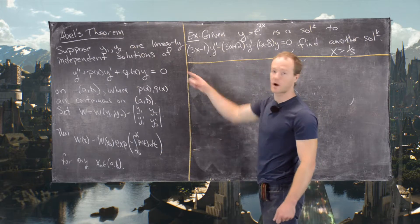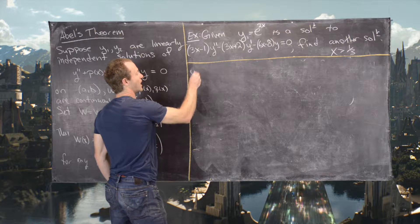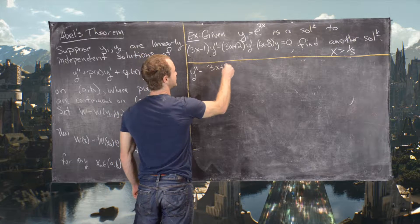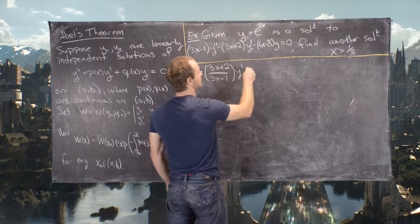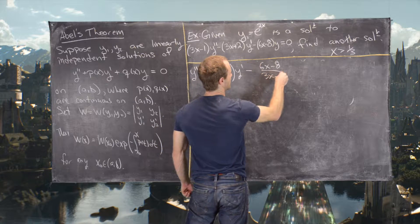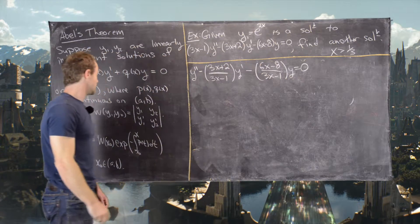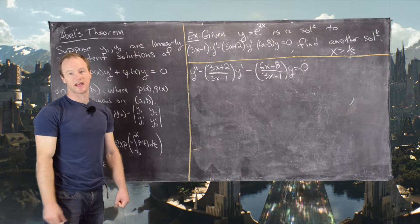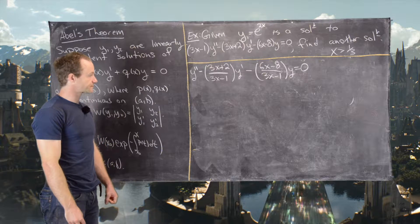Our differential equation is not quite in the right form yet, so the first thing we do is divide through. We get y″ − [(3x + 2)/(3x − 1)]y′ − [(6x − 8)/(3x − 1)]y = 0. Notice p and q are continuous in the region x > 1/3, which is the one we're interested in.